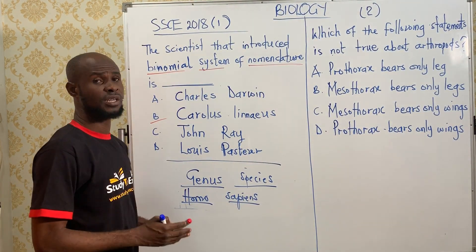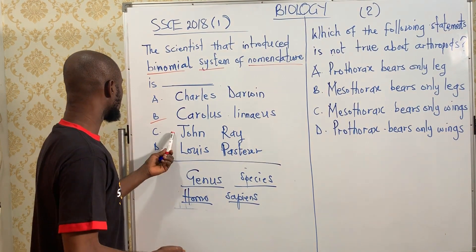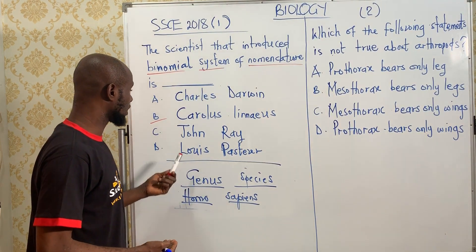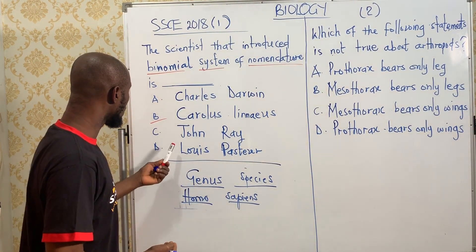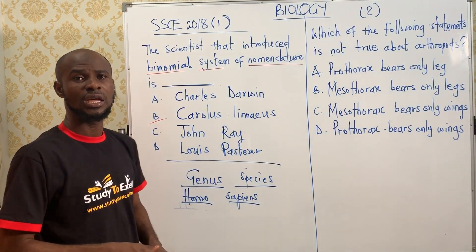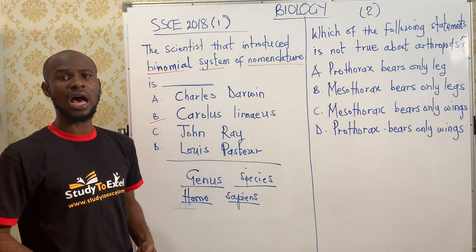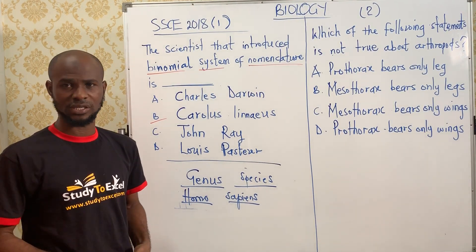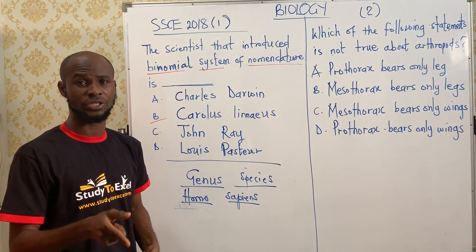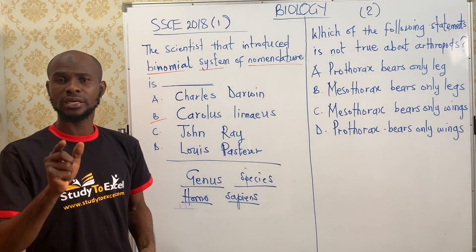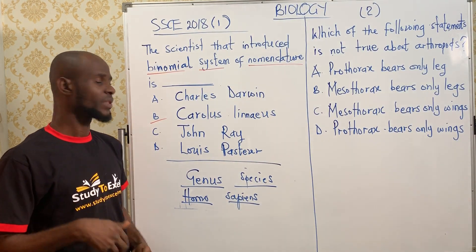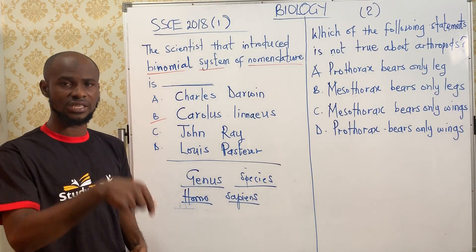Don't forget that Carlos Linnaeus is a Swedish biologist. We also have John Ray, who is an English naturalist — he is not the answer. Then we have Louis Pasteur, the scientist who discovered the process of pasteurization and vaccination. Pasteurization is the process by which the temperature of milk is adjusted, killing the pathogens or disease-causing microorganisms inside the milk.